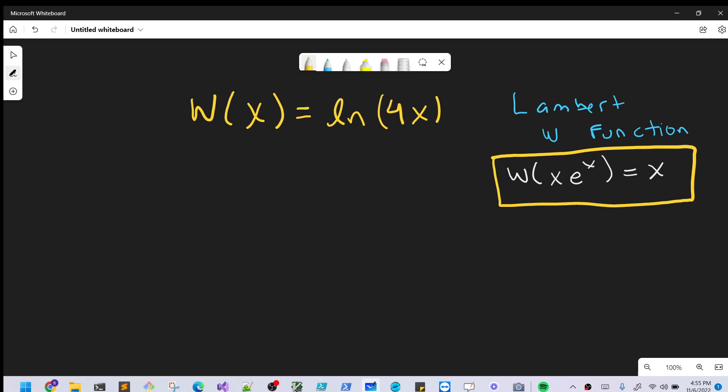Continuing a series of videos on the Lambert W function, we have the problem on the board: Lambert W of X equals LN 4X. It's interesting. This is all a bit of a different format than some of the other problems we've seen.